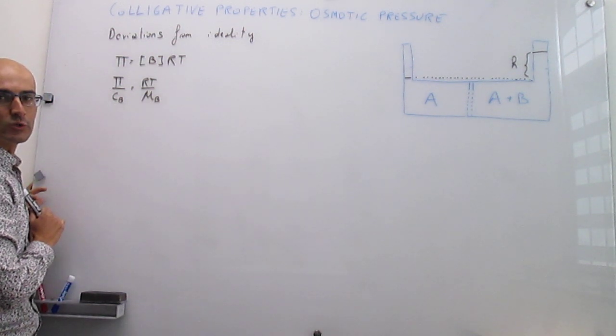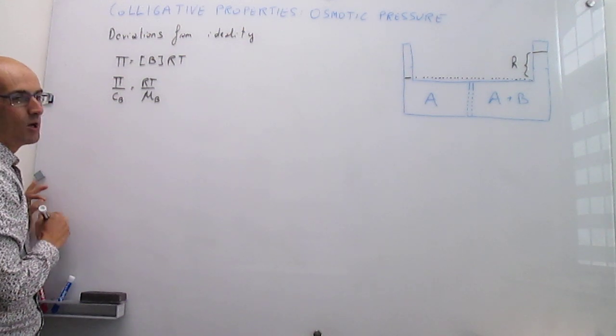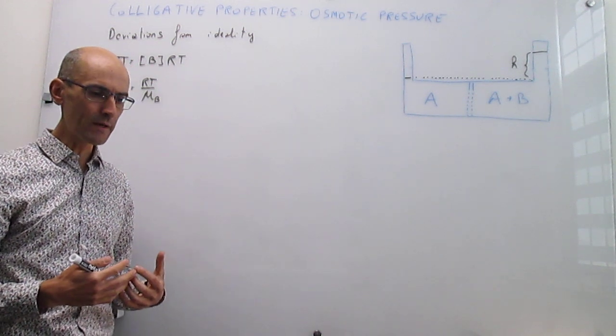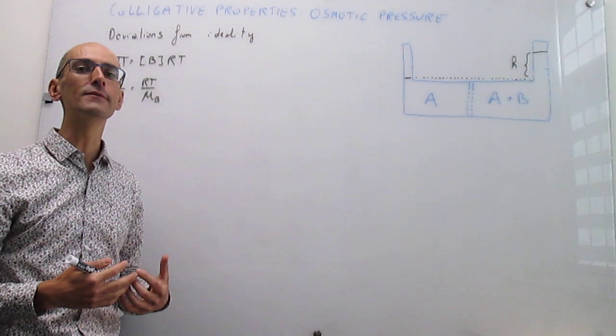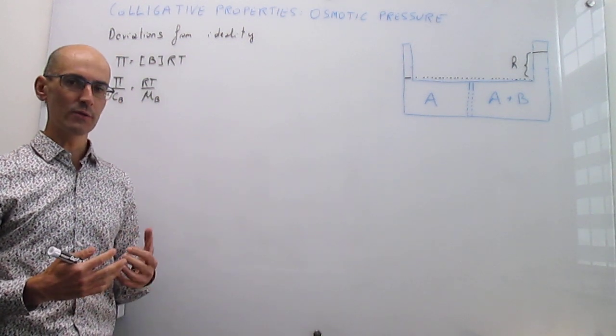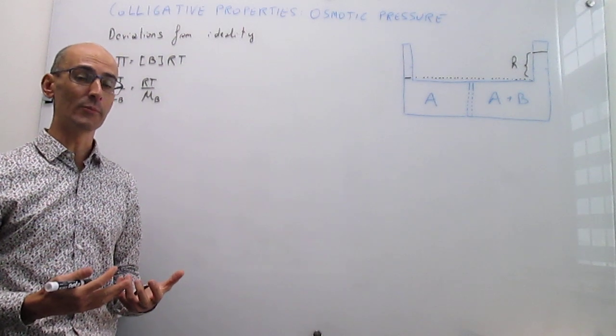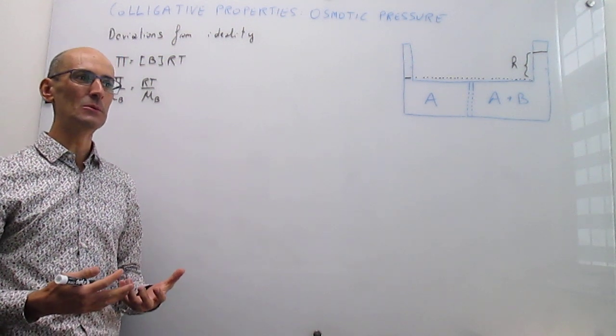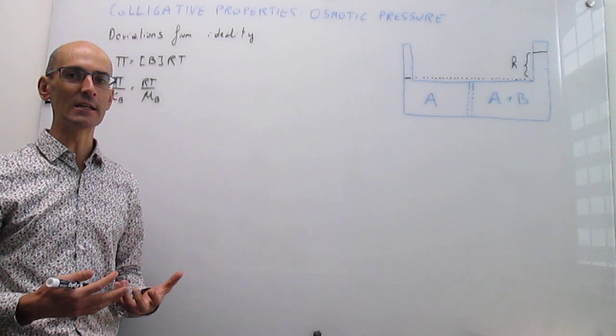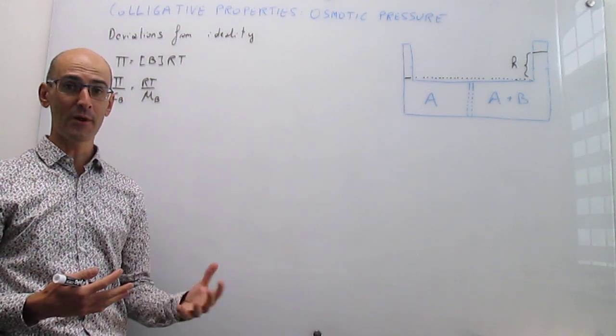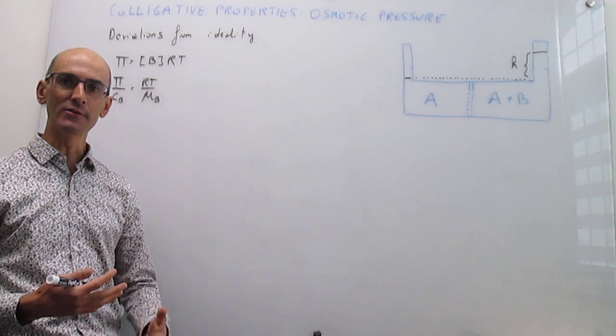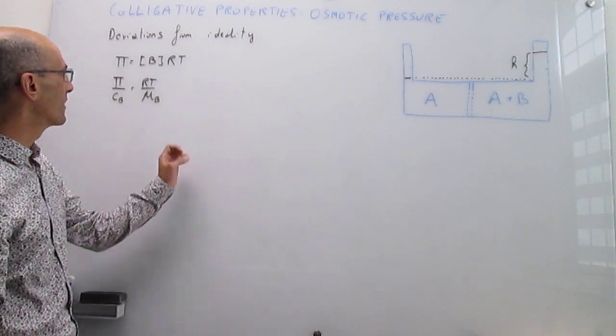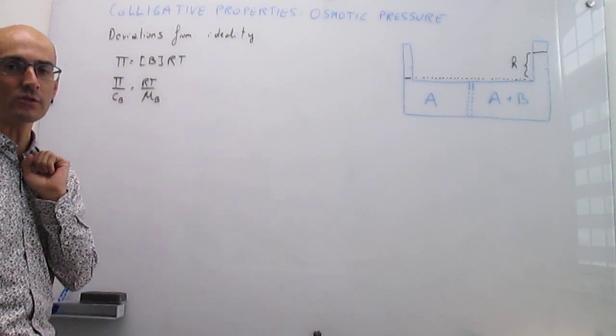Now the question is what happens when you are not under ideal circumstances? Well, ideality is reached when the concentrations are very low, but if your concentrations are not low enough, then these equations will not apply. So the variable that breaks down the ideal approximation is the molar concentration. So then it is natural to try to incorporate non-ideal behavior by expanding the property that you are interested in, the osmotic pressure, in terms of powers of the variable that breaks down the approximation, which is the molar concentration.